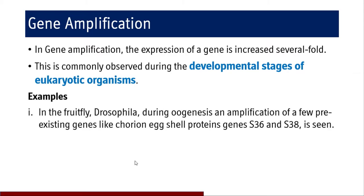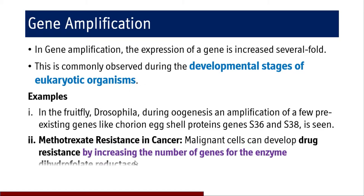Take the example of Drosophila, the fruit fly. During oogenesis, amplification of a few pre-existing genes like chorion eggshell proteins S36 and S38 is seen, because egg shell proteins need to be synthesized in greater quantities. Another example is methotrexate resistance in cancer: we give methotrexate as an anti-cancer treatment, but malignant cells can develop drug resistance by increasing the number of genes for the enzyme dihydrofolate reductase so that they can survive despite methotrexate therapy, leading to methotrexate resistance.